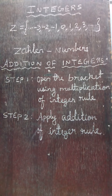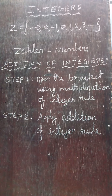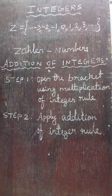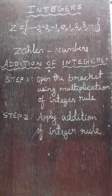In our lower classes we have learned what natural numbers and whole numbers are. Natural numbers are a collection of numbers from 1, 2, 3 and so on. Whole numbers are a collection of numbers from 0, 1, 2, 3 and so on.